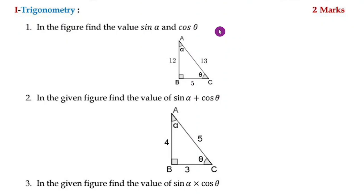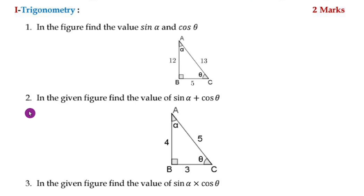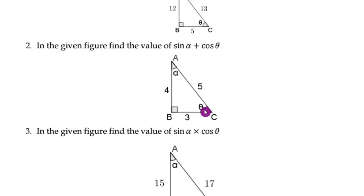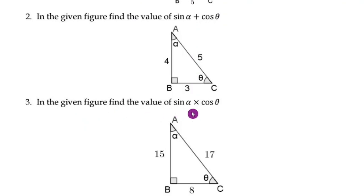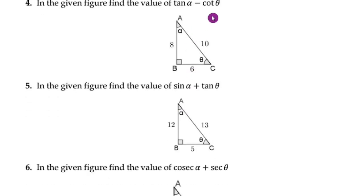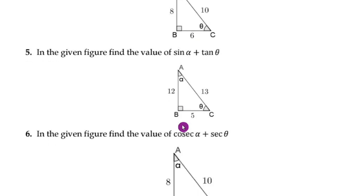The next one is trigonometry. It is very easy because they will give a figure. By seeing the figure, you have to find the value of sin α, cos θ, tan θ, sec θ, cosec θ, or combinations like sin α + cos θ or sin α × cos θ. You must know these ratios; otherwise you won't get the marks. I have given figures here — copy the problem and solve it.